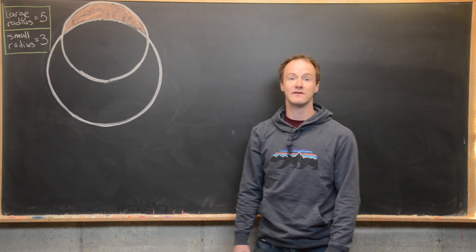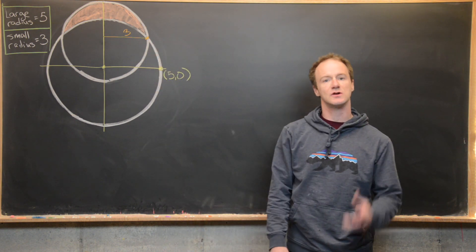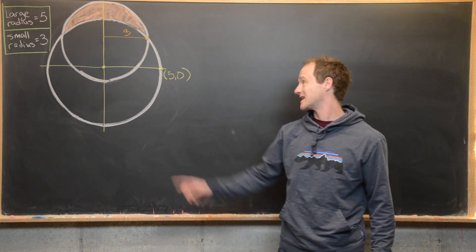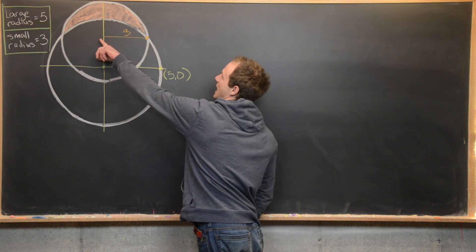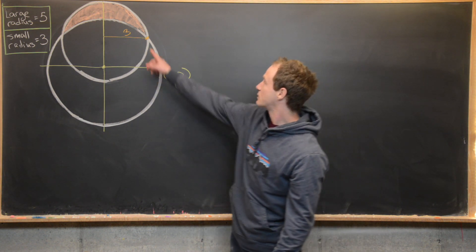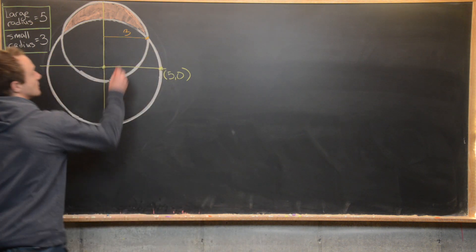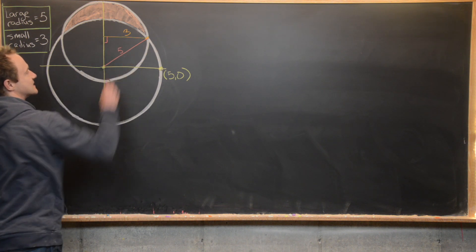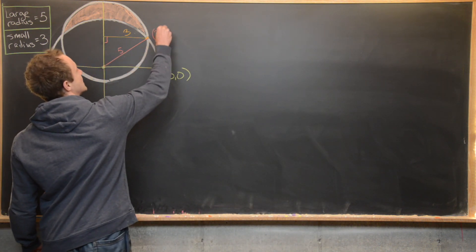I've set up the Cartesian coordinate plane, placing the large circle so its center is at the origin. That makes the intersection point of our large circle with the x-axis at the point (5, 0). The distance from the y-axis to our smaller circle is three, because the small radius equals three. We can complete a right triangle where the hypotenuse has length five, giving us a 3-4-5 right triangle. So that coordinate is (3, 4).